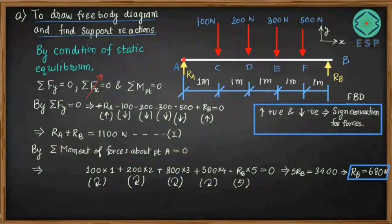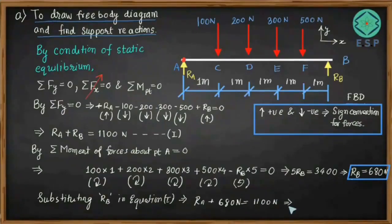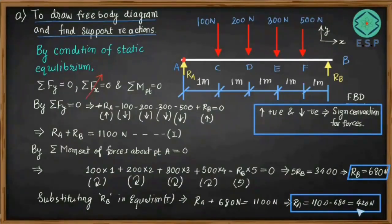Substituting RB = 680 N into Equation 1: RA + 680 = 1100, so RA = 1100 − 680 = 420 newtons. We have found support reactions RA = 420 N and RB = 680 N. Our first step to obtain support reactions is now complete.